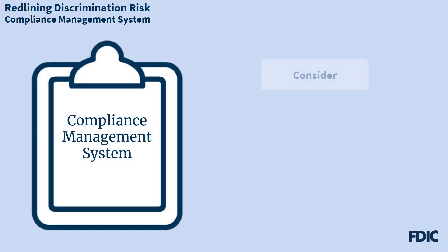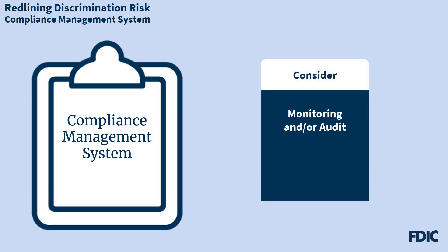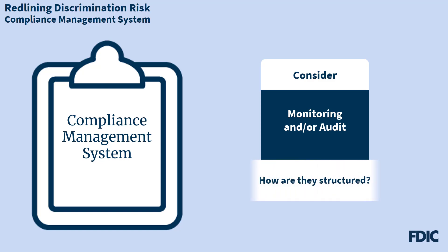A bank also may be able to leverage monitoring and/or audits conducted to assess discrimination risks relating to the institution's underwriting and pricing patterns to consider redlining risk as well. However, how monitoring or audits are structured affects how useful they will be in identifying redlining risk. For example, if a bank limits its monitoring or audit to a limited set of products, that monitoring or audit likely would not effectively mitigate redlining risk related to other products.